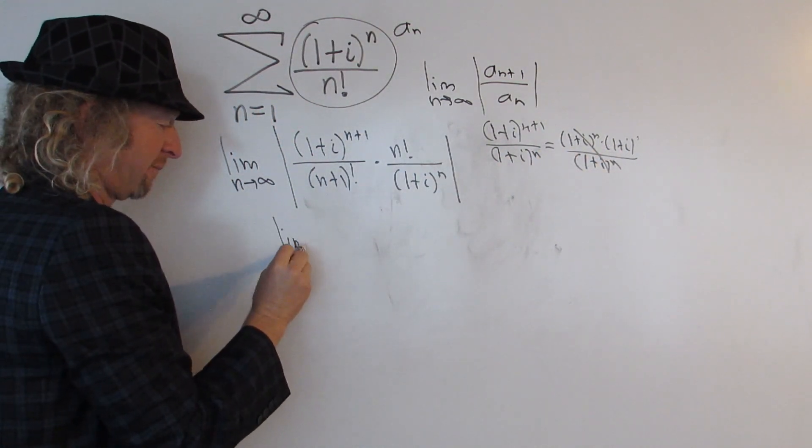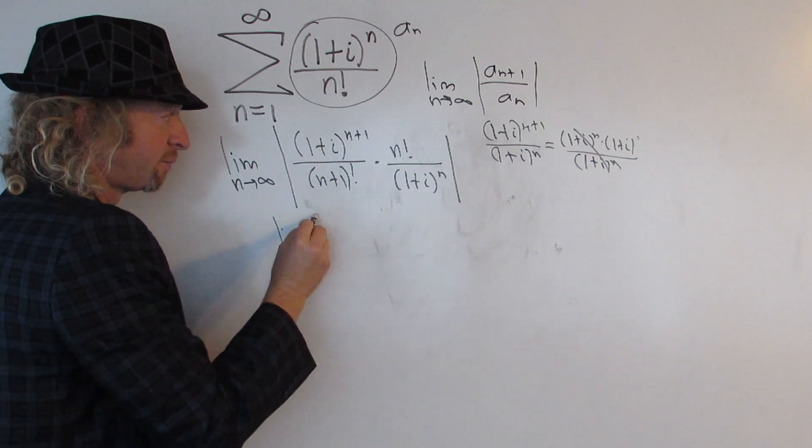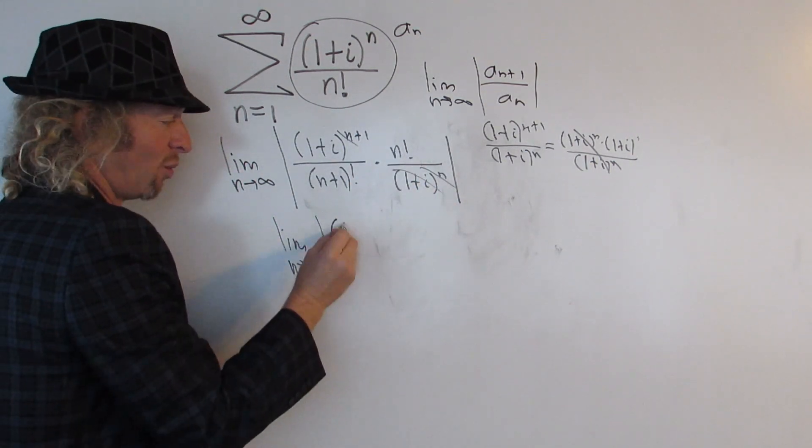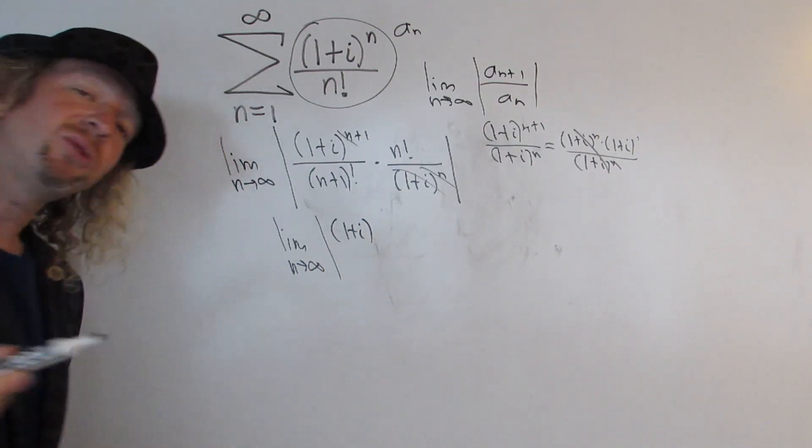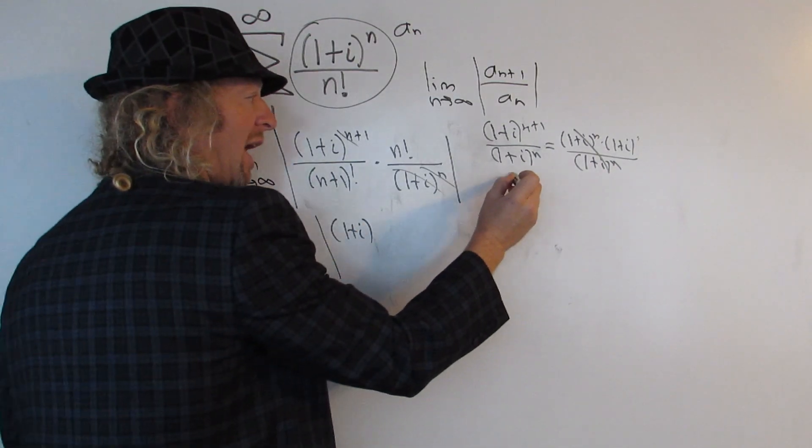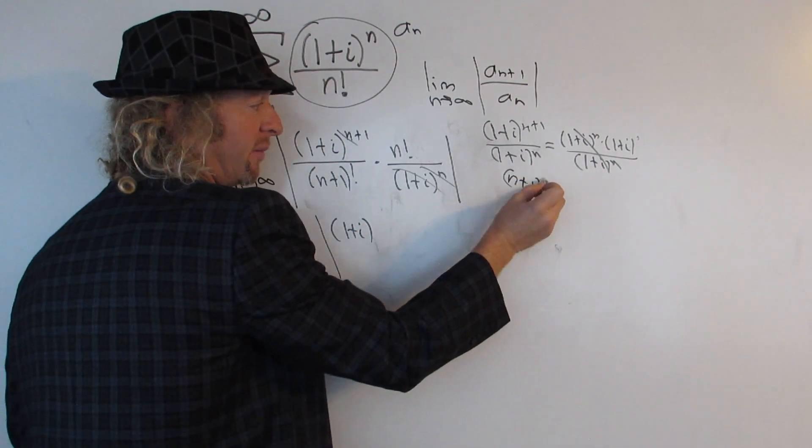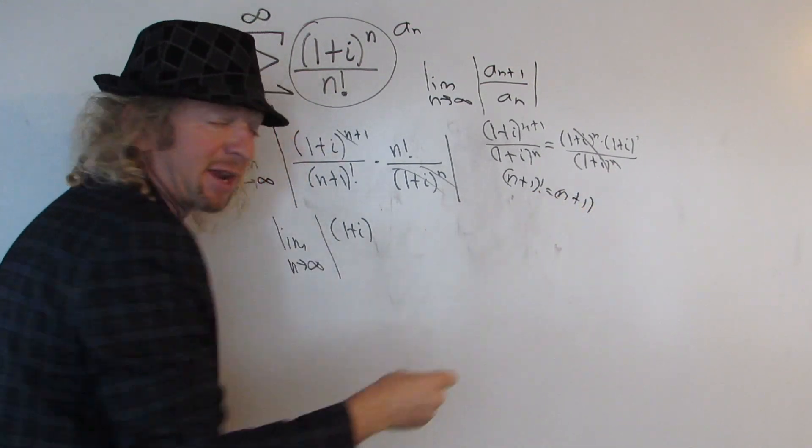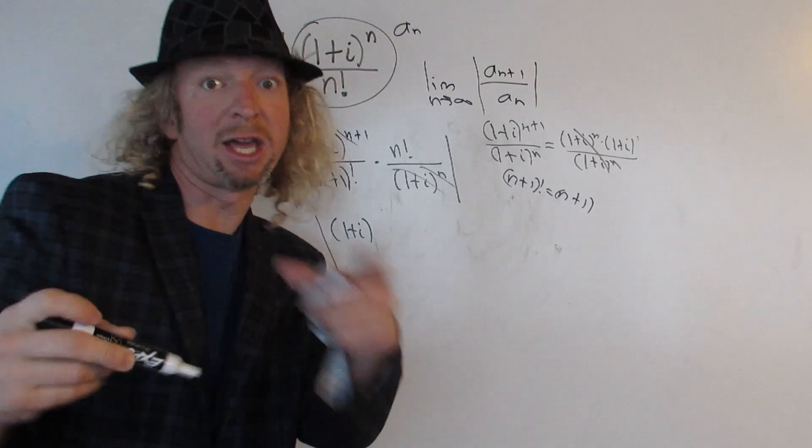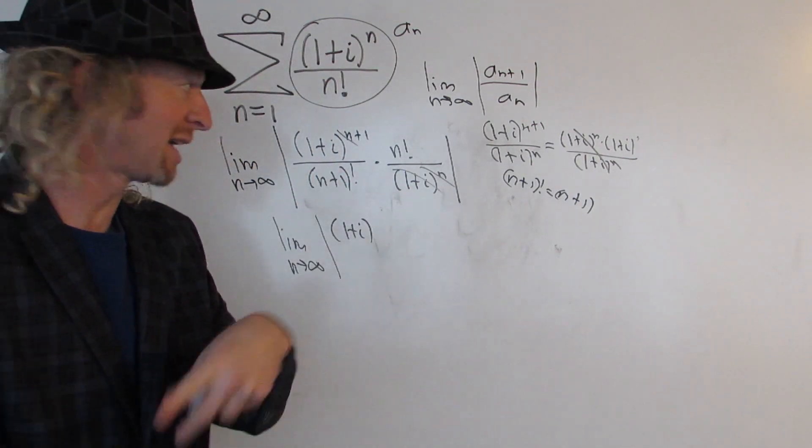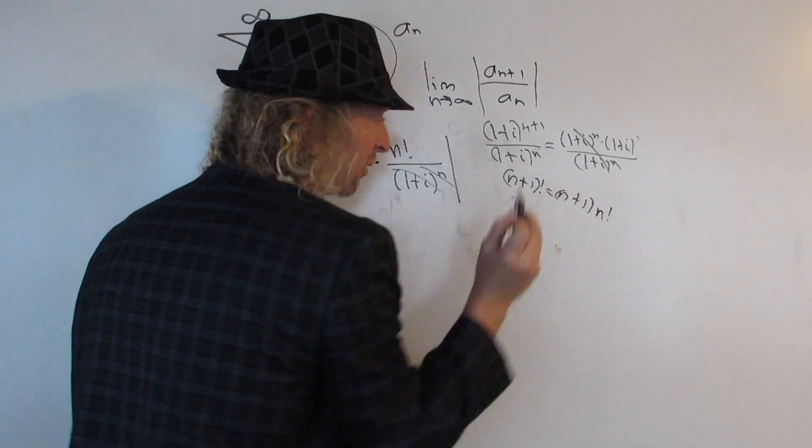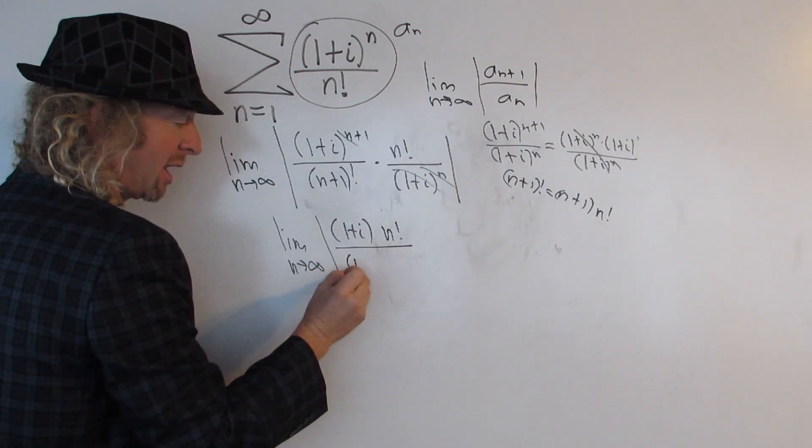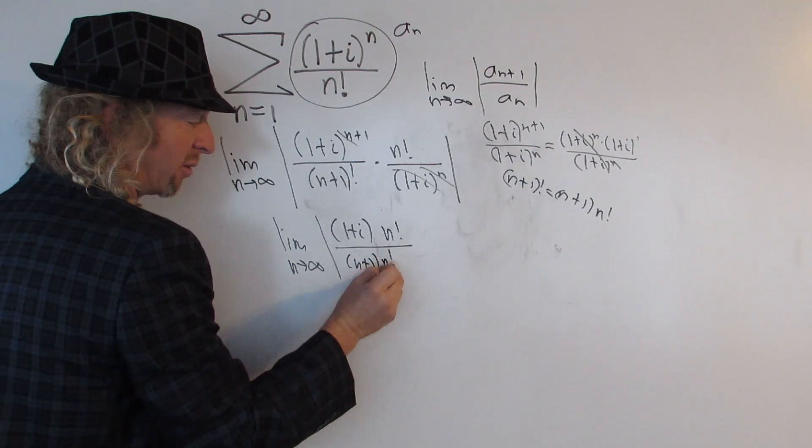So this is equal to the limit as n goes to infinity, so these go away. We just have (1 plus i), so (1 plus i). What about the factorials? Well, (n plus 1) factorial is the same thing as n plus 1, and then the next one would be n, n minus 1, n minus 2, n minus 3, n minus 4, etc. So the rest of it is n factorial.